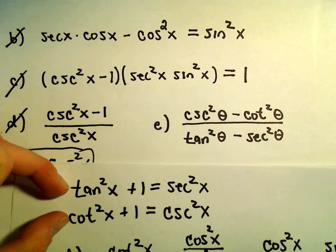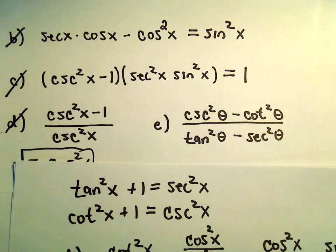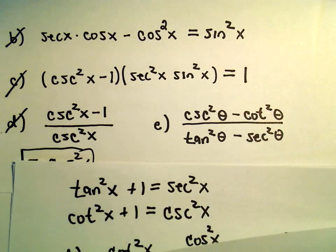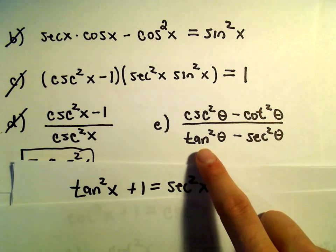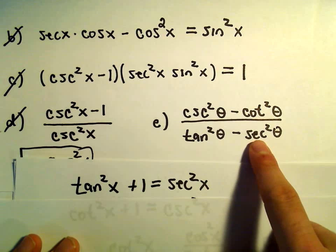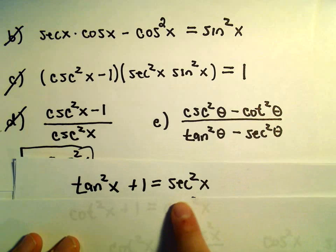Let's see if we can't sort of manipulate these identities to get these expressions. Let's maybe deal with the numerator first.